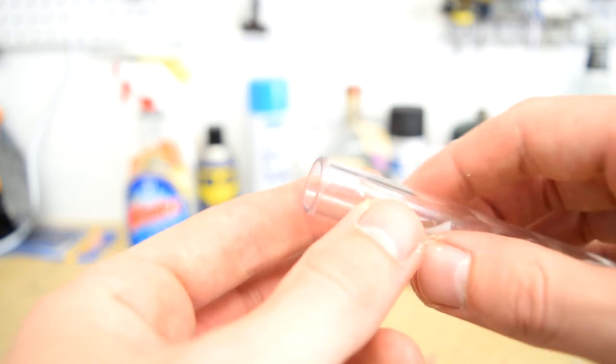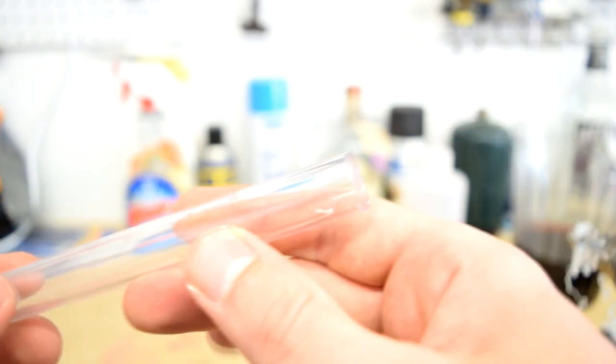Once you've chamfered the end to your satisfaction, pull the tubing off the RFP and clean the end of any debris.